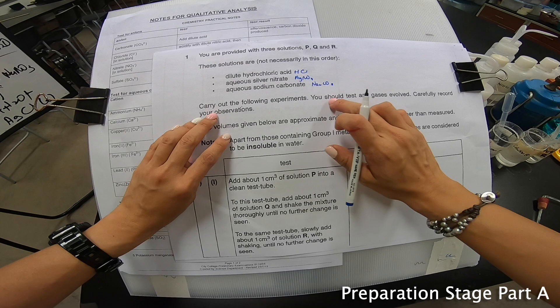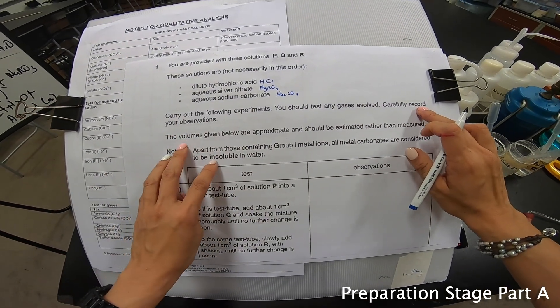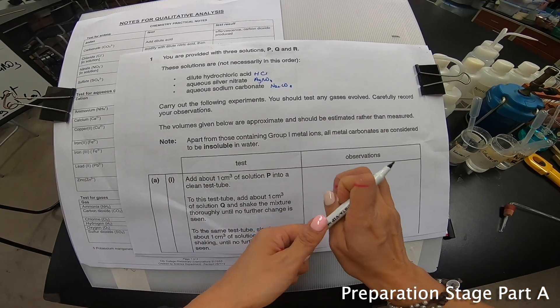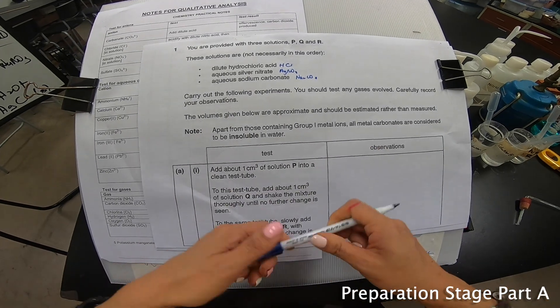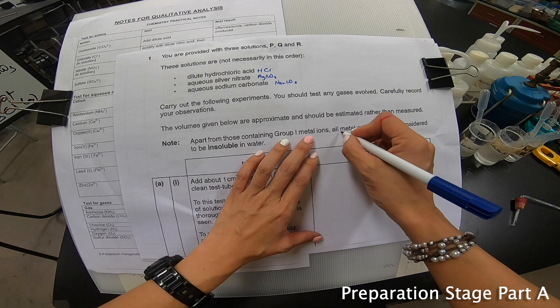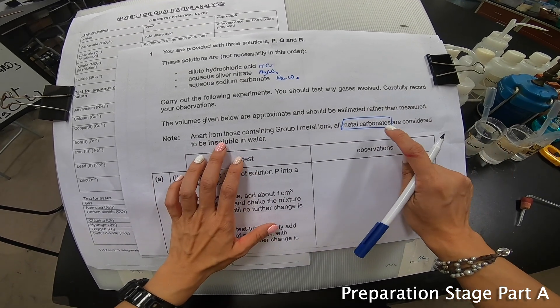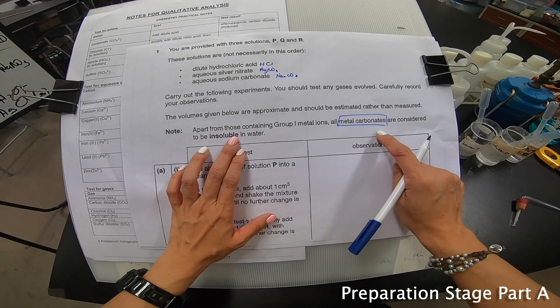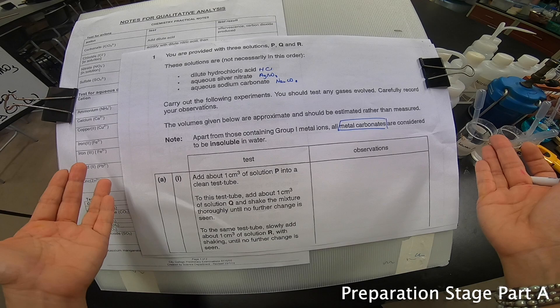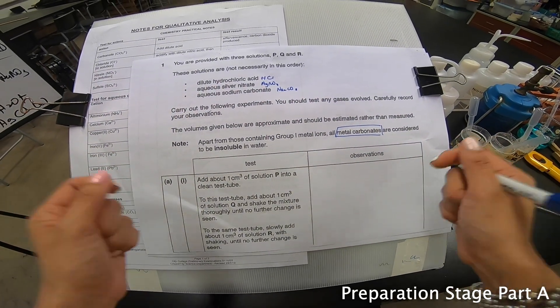Carry out the following experiment and you should test any gases evolved. Carefully record your observation. The volume given below are approximate and should be estimated rather than measured. Apart from those containing group 1 metal ions, all metal carbonates are considered to be insoluble. This is a very good hint. But doesn't matter, let's move on because, as I always say, we start with PE. P stands for preparation and E stands for execution.